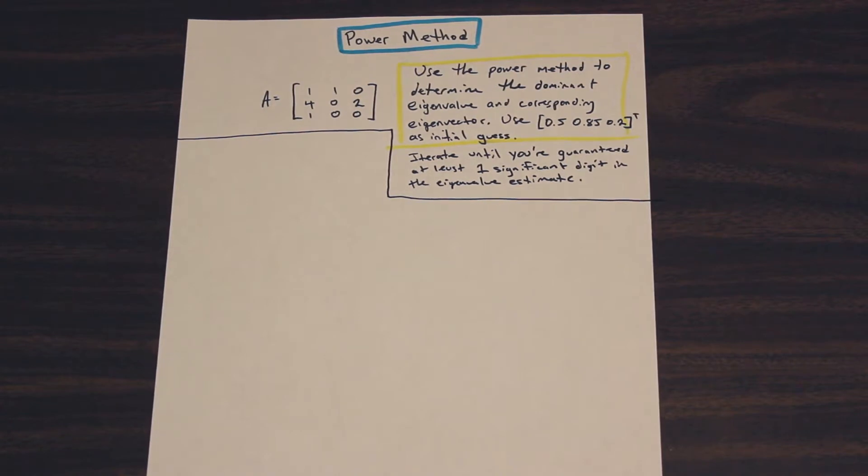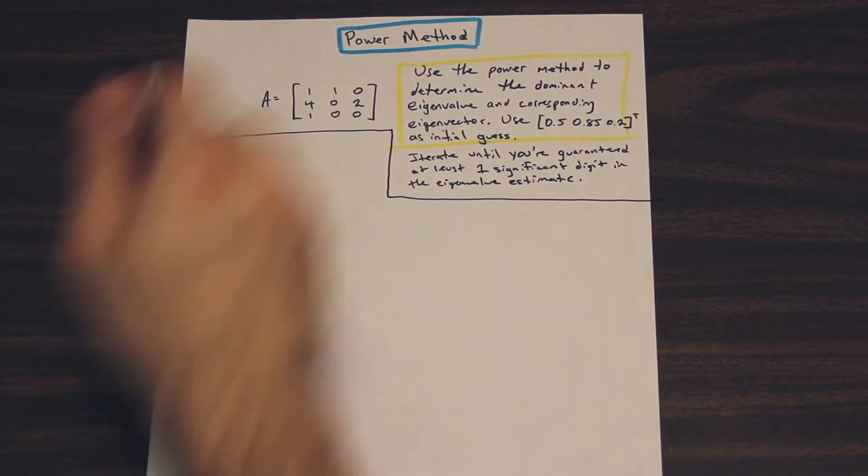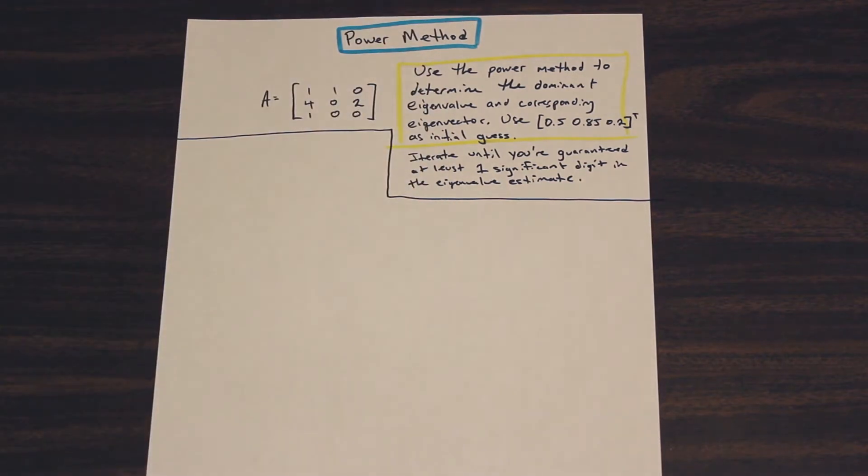We're asked to use the power method on this matrix A here to determine the dominant eigenvalue and corresponding eigenvector. Use 0.5, 0.85, 0.2 transpose as initial guess. Iterate until you're guaranteed at least one significant digit in the eigenvalue estimate. So well, what's our first step here?